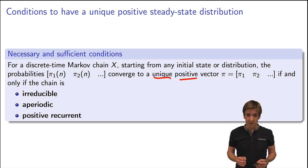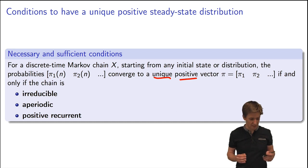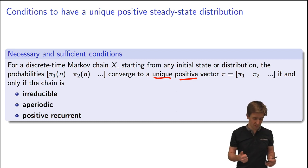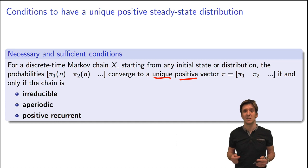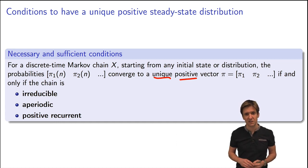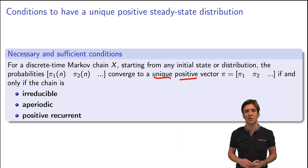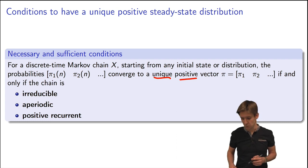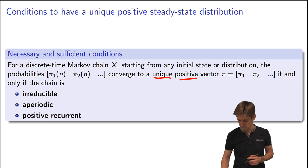To have that, the chain needs to be at the same time irreducible, aperiodic, and positive recurrent. In the remainder of this video, we're going to explain in detail each of those conditions.